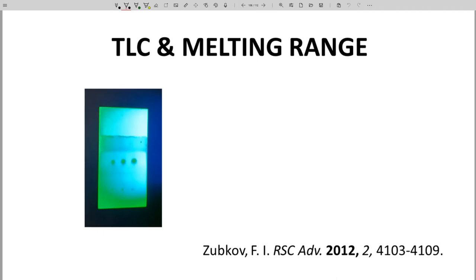On the screen is an image of the TLC plate of the product. The mobile phase is 100 percent ethyl acetate. The spots for the product have traveled 2.2 centimeters up the plate. The solvent front traveled 4 centimeters. That gives an RF value of 0.55. The TLC looks promising. Just one spot. How about the melting range?